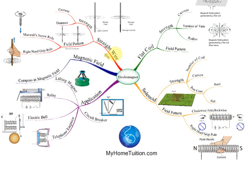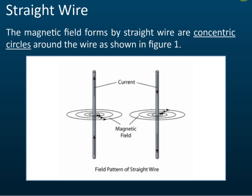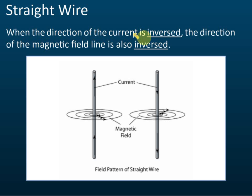For all three electromagnetic configurations — straight wire, flat coil, and solenoid — you need to know the field patterns and the factors that affect the strength. When the direction of the current is reversed, the direction of the magnetic field lines is also reversed.